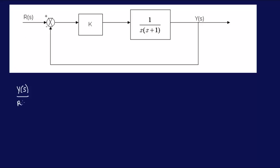Let's call it T of S. This is typically given by G of S, which is the forward path, over 1 plus the return path, which is G of S, H of S.